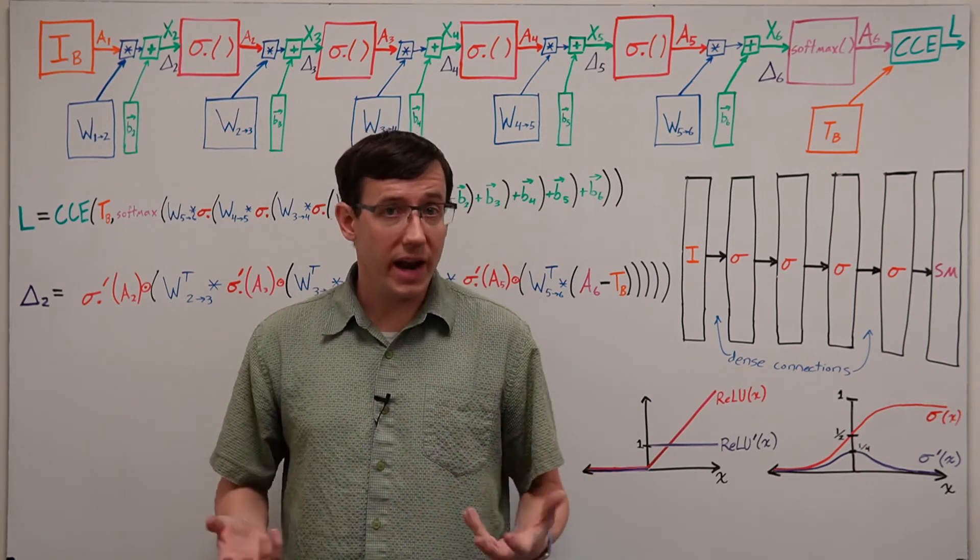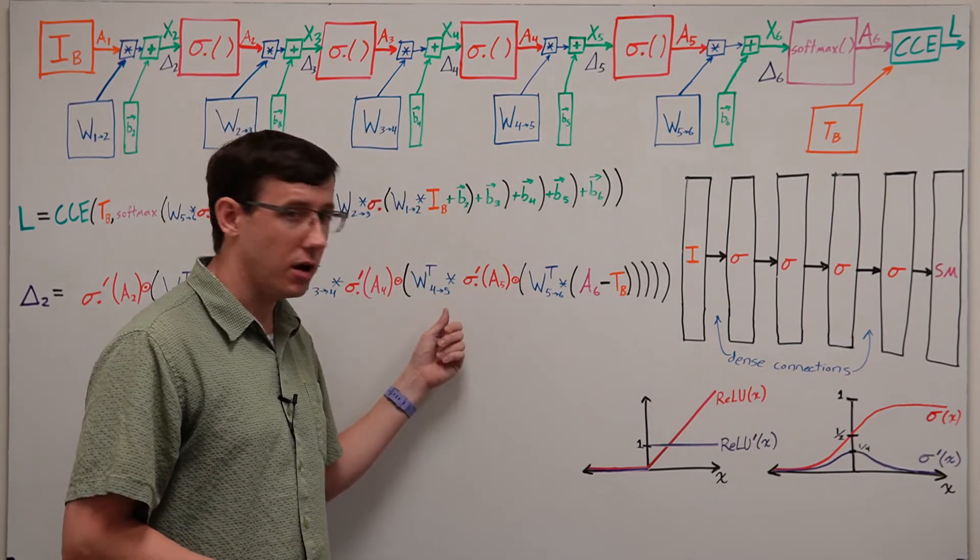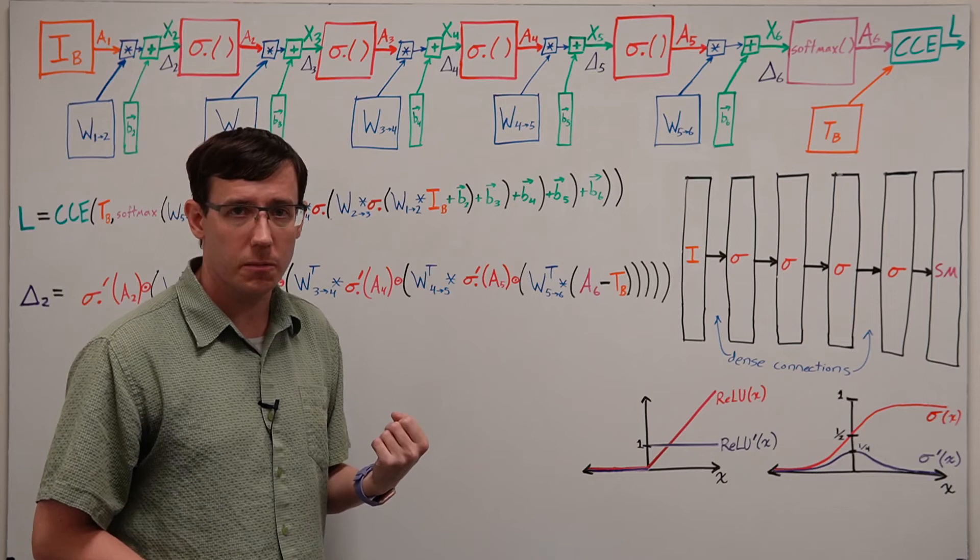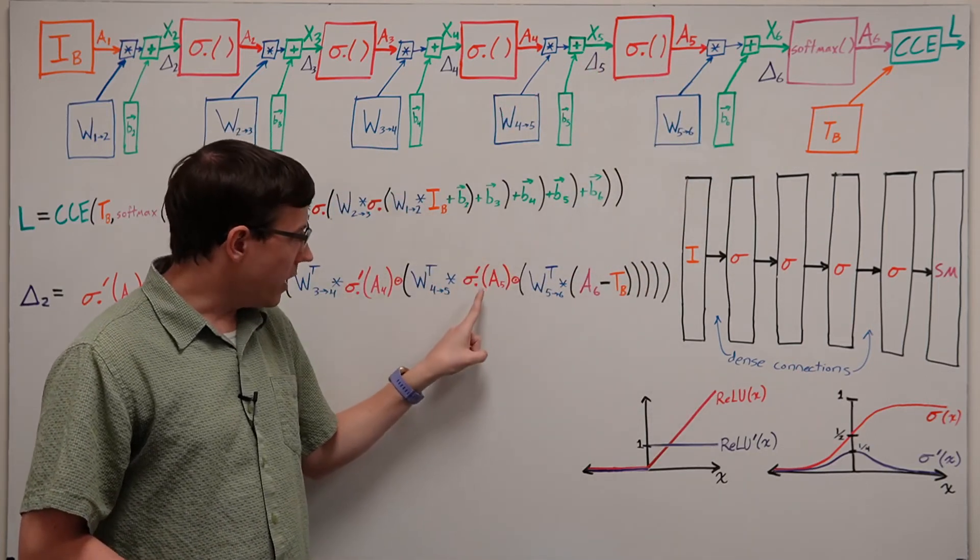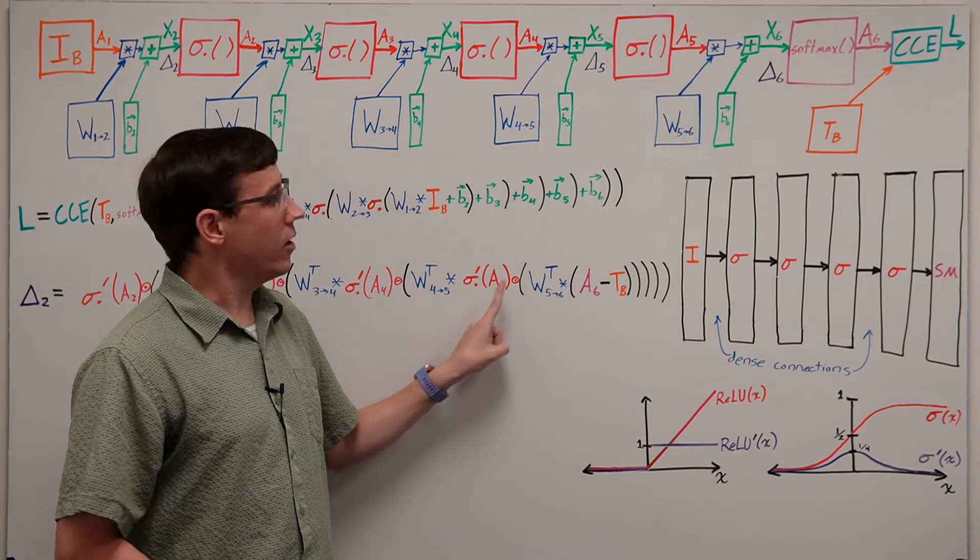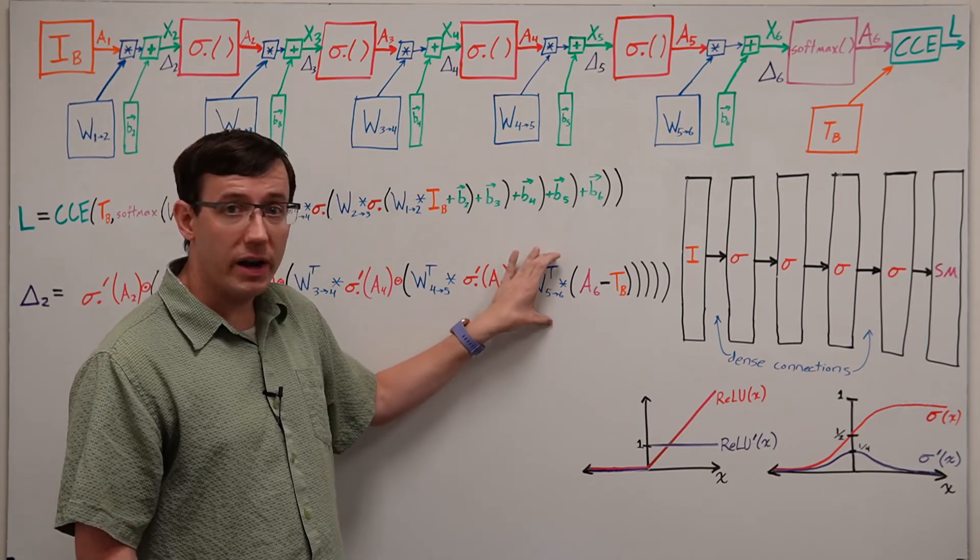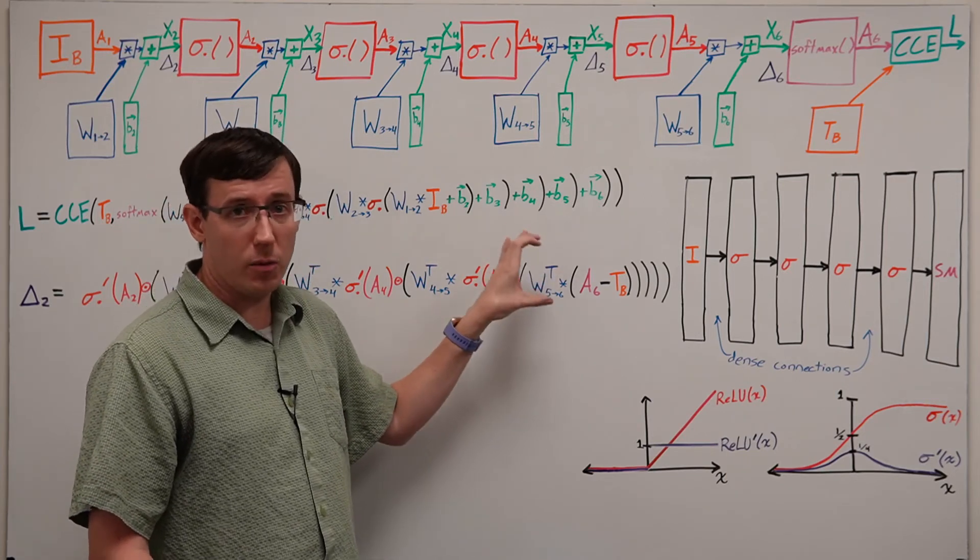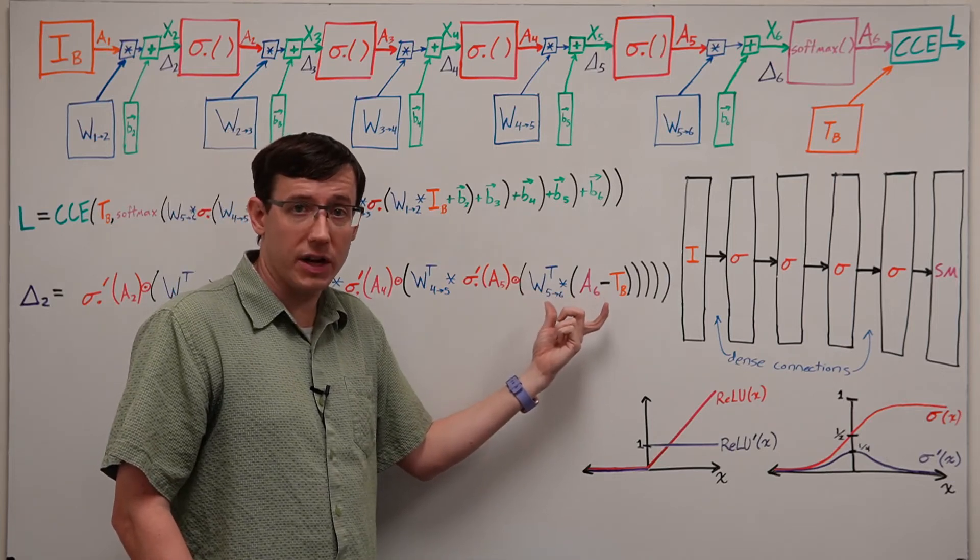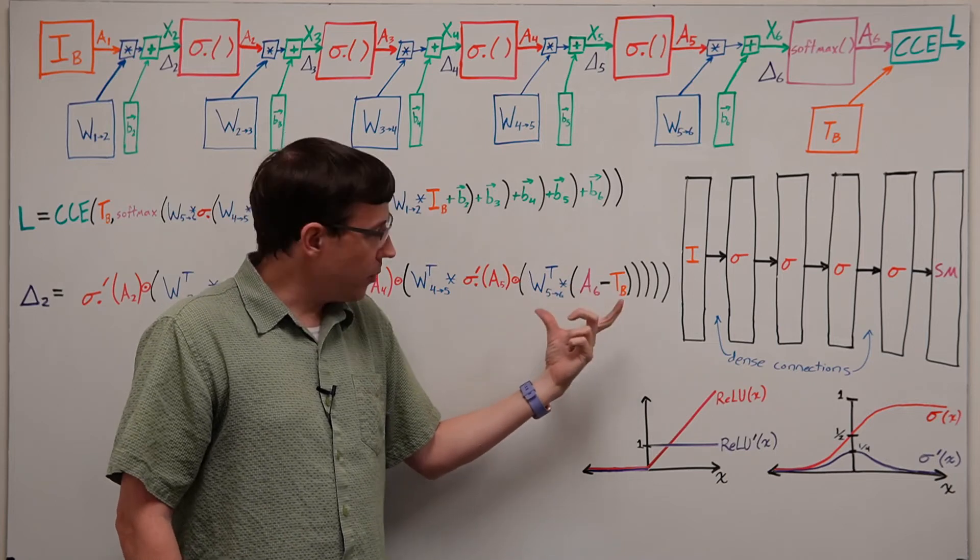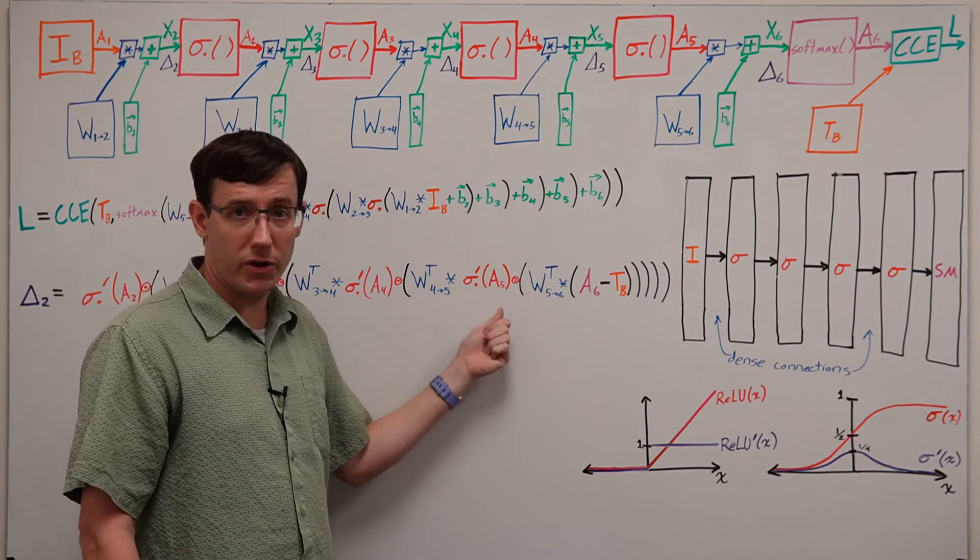One of the ways we can counteract vanishing gradients is by changing our initialization of the weight matrices. Since every layer that we backpropagate through multiplies by a sigmoid derivative, and also the transpose of the weight matrix, if we generate larger initial random weights, that will tend to increase the magnitude of the deltas, and if we've chosen those weights properly, that could counteract the decreasing of the deltas from the derivative.